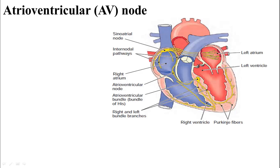The atrioventricular nodes are located inside the wall of the right atrium. From the atrioventricular node, the impulse is passed through the atrioventricular bundle, or Bundle of His. The Bundle of His divides into the left and right bundle branches running alongside the interventricular septum, and finally the impulse reaches the myocardium by way of the Purkinje fibers or Purkinje network.